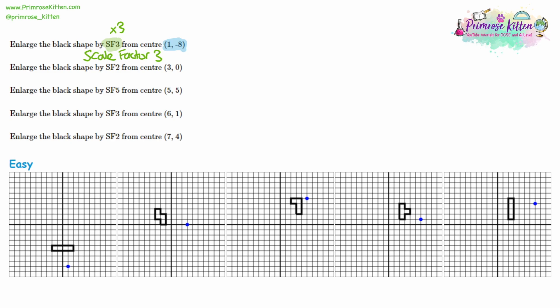So how do we draw this larger rectangle in the correct place? It's all about counting the distance between the center of enlargement and the corners of the shape. So let's take the bottom right corner. The distance is one to the right and three up to get to the shape. Now, as well as the shape being three times bigger, these distances will also be three times bigger. So we're going to multiply that distance by three: one across and three up, three times over. And now we have the coordinate of the bottom left of our brand new shape.